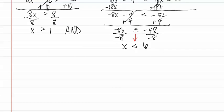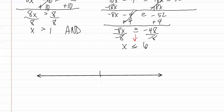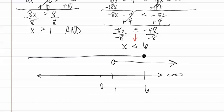Now let's draw our graph. Let's put zero, one, and six on the number line. For the first inequality, we have x greater than one, which means an open dot at one that goes in the greater than direction towards positive infinity. Next, we have x less than or equal to six, which means a closed dot at six that goes in the less than direction towards negative infinity. We only look for the overlapping section, which is between one and six. This means we have an open dot at one, a closed dot at six, and we connect those two.